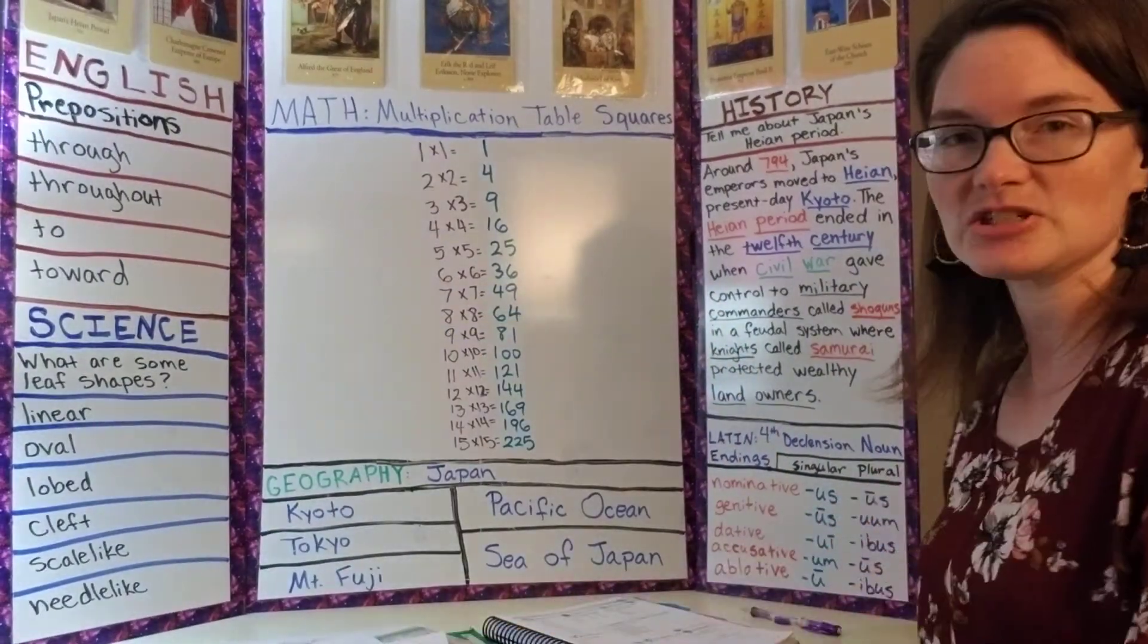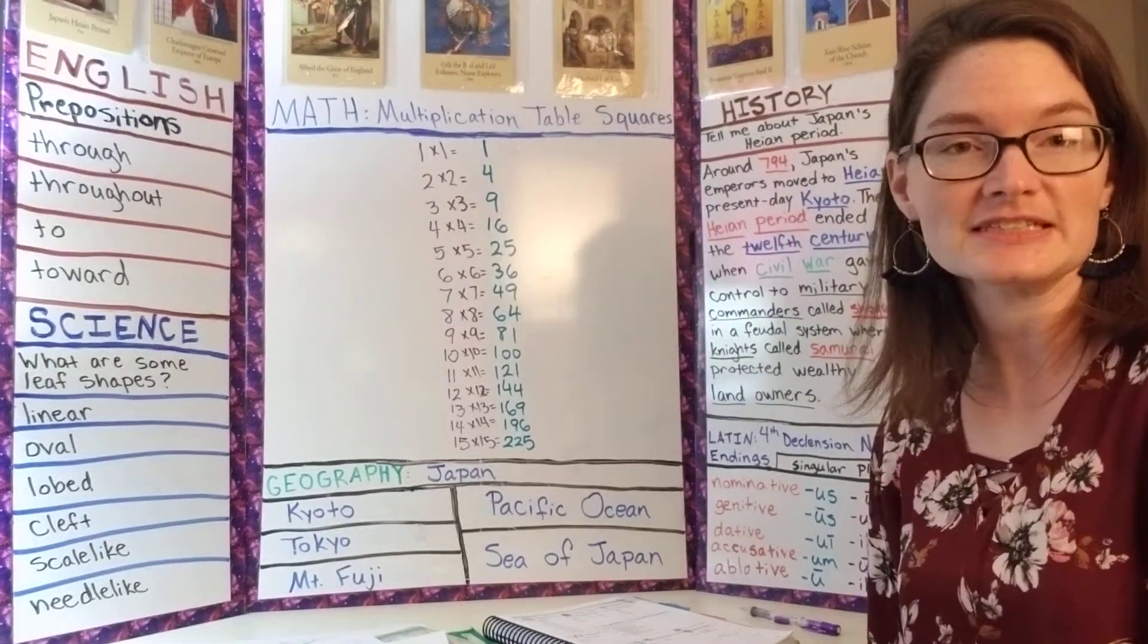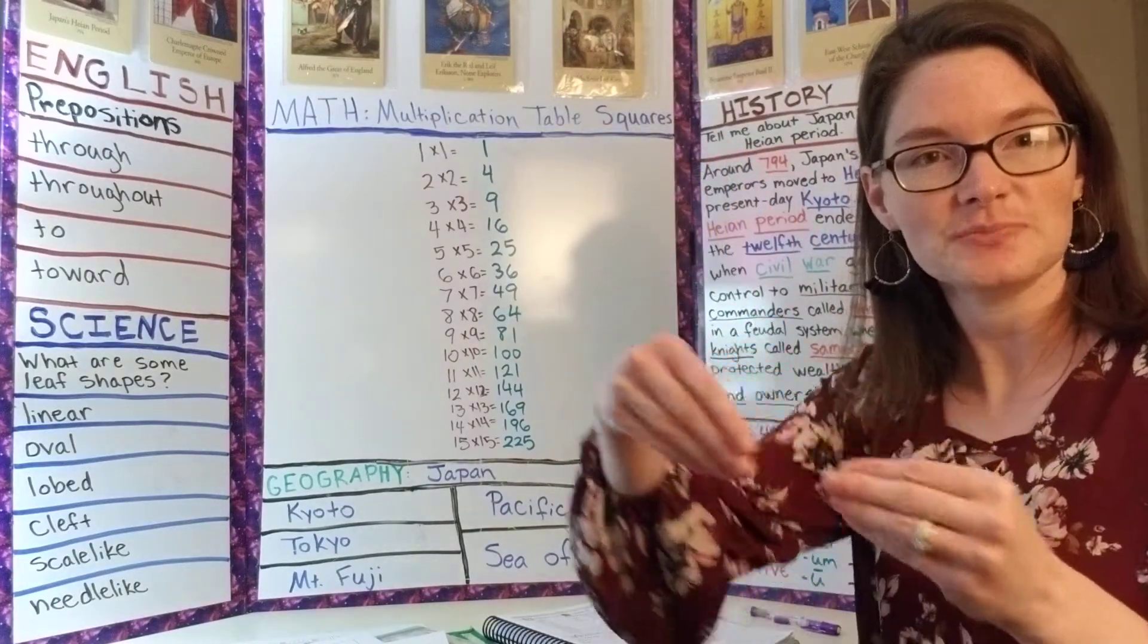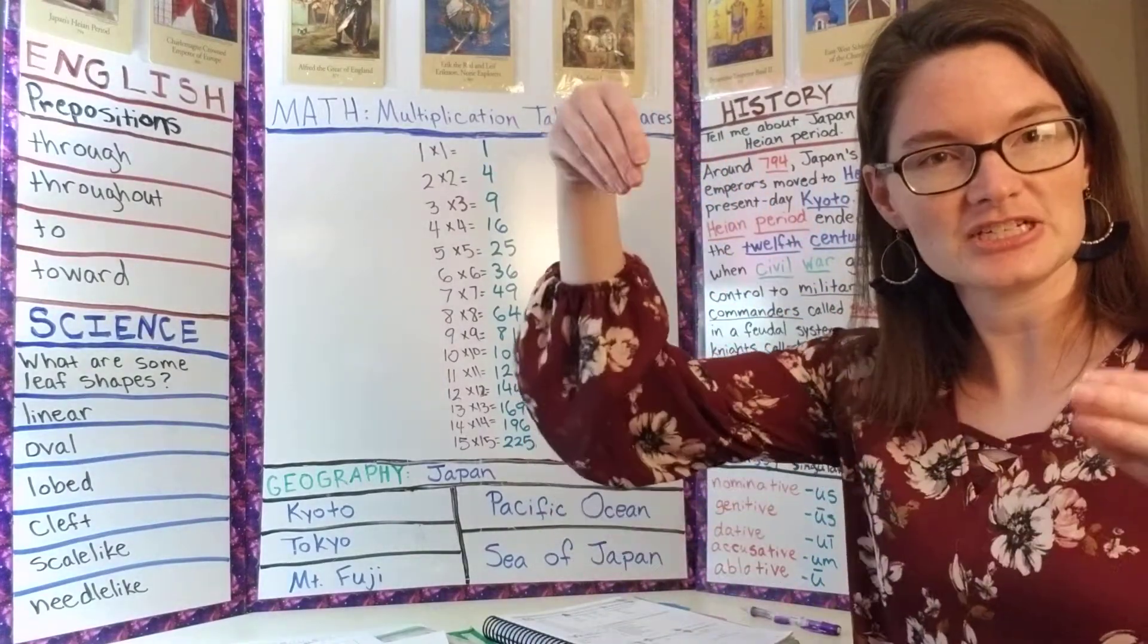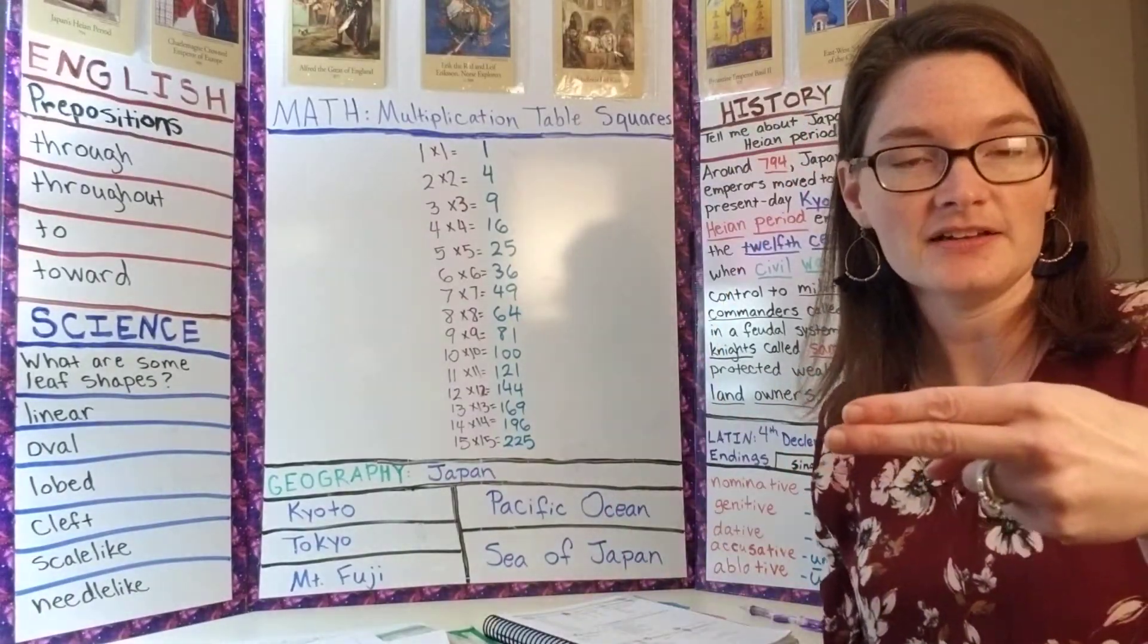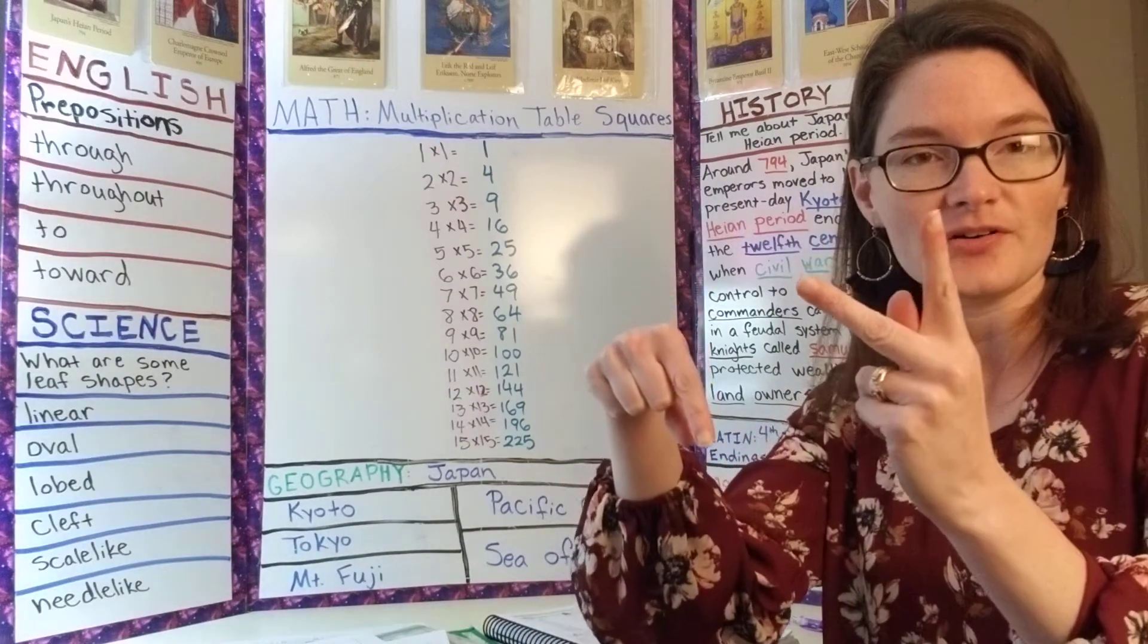And then for history, we did some hand motions. We did around 794, Japan, kind of like a banana shape of Japan's emperors, move to Heian, present-day Kyoto.